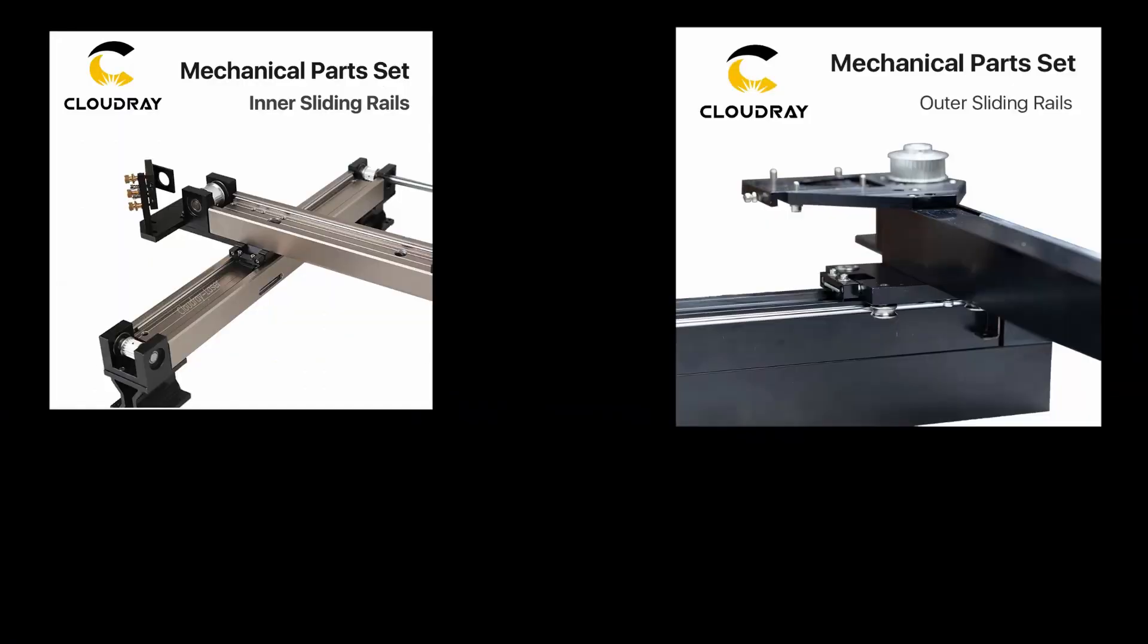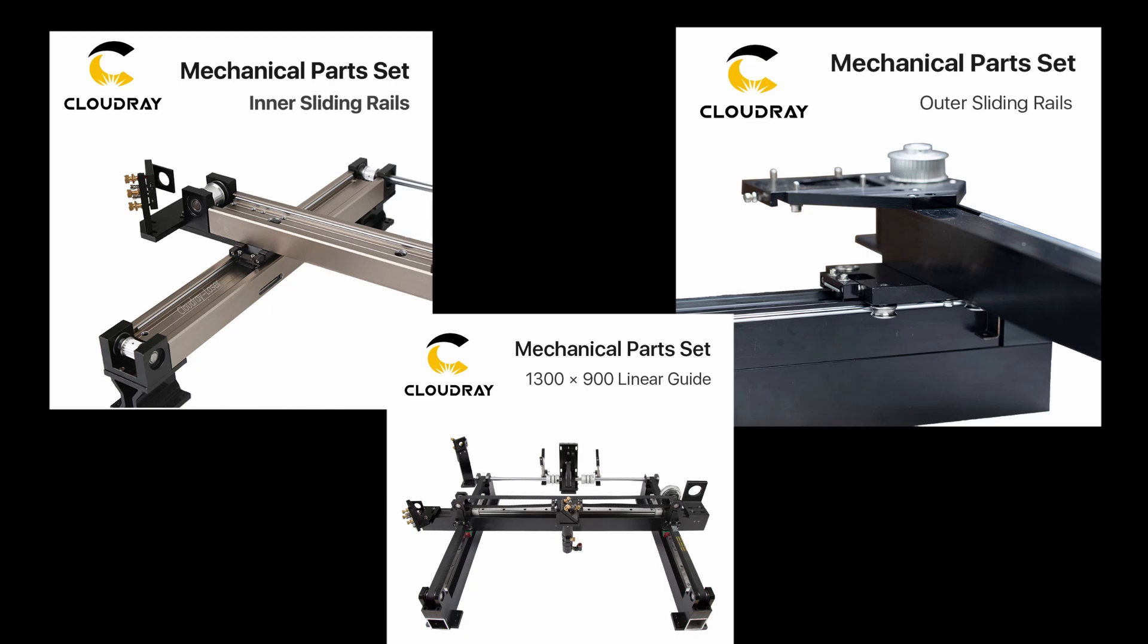So which do you need for your laser machine? Well the inner and outer rails are pretty much the same performance wise and they're quite a bit cheaper than the linear rails. Now both the inner and outer rails are faster and more stable at high speed like you would use for engraving but they don't offer the same precision as the linear rails.